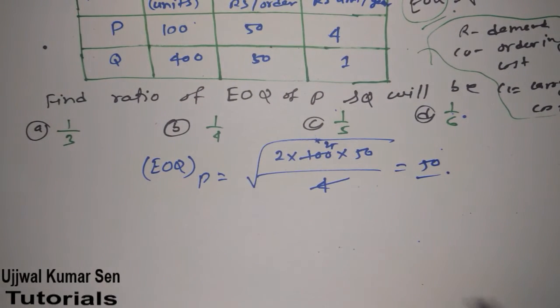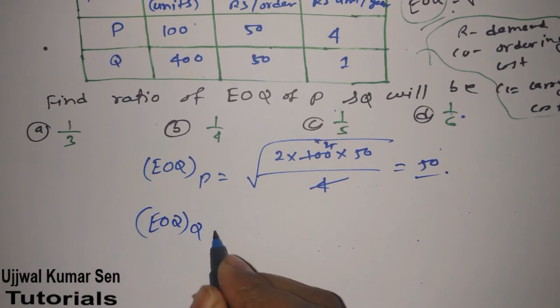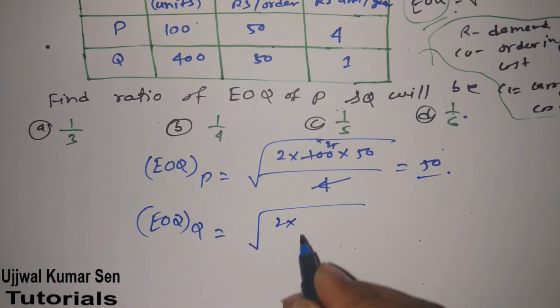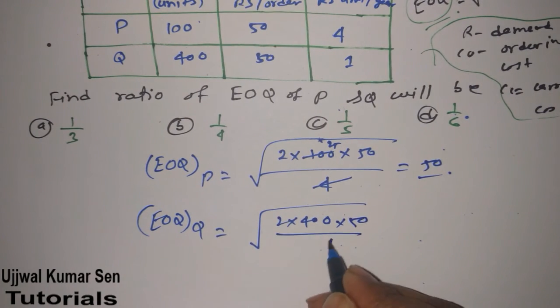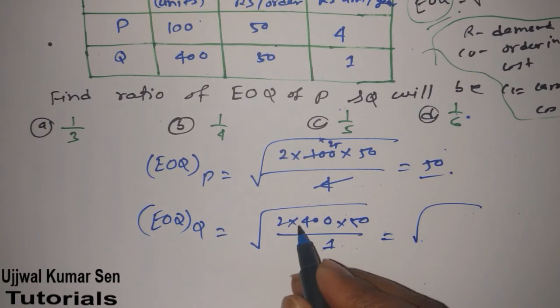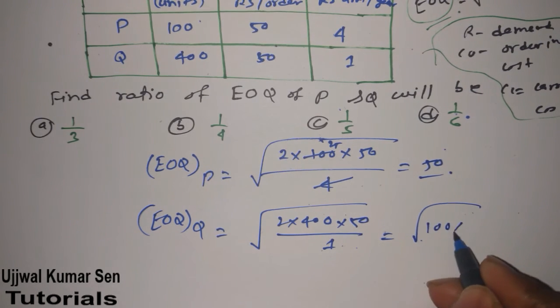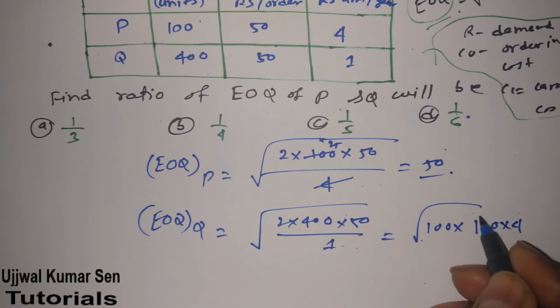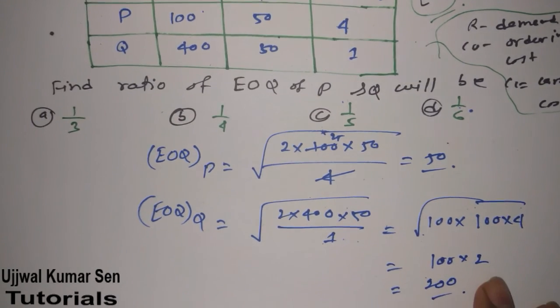We don't have any need for a calculator for this calculation. Now we will find out EOQ for product Q. So 2 R, R is 400 as you can see on your screen also, and this is 1. So what we can get from here - this is 100, multiple 100, multiple 4. So this is 100, 100, 100. And this one is 2, so it's 200.